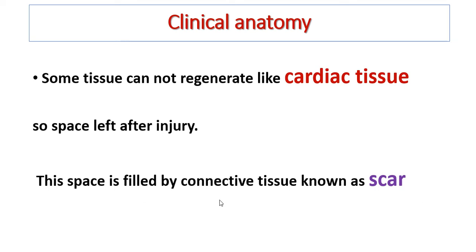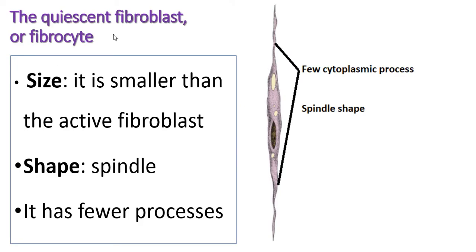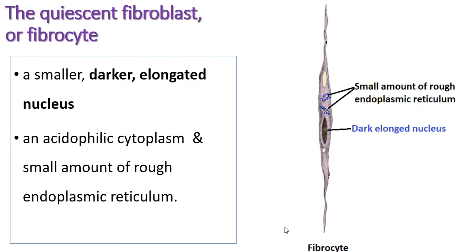The inactive fibroblast, or fibrocyte, is smaller in size than the fibroblast and is spindle-shaped. The central portion is thicker and the two peripheral processes are thinner, and it has very few processes.